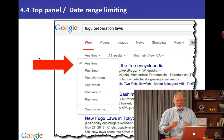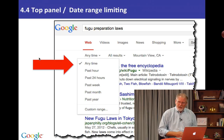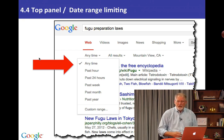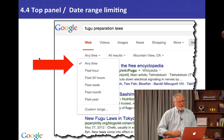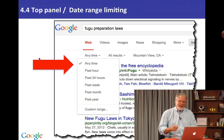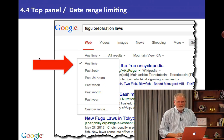So you get the idea — it's a fairly simple concept. You can restrict the search results based on the time they were published to the web. Note that the content may have been written much earlier, even in the 17th century, but if it was published to the web in, say, 2011, that's the date attributed to that document. Go ahead and try this in the next activity.